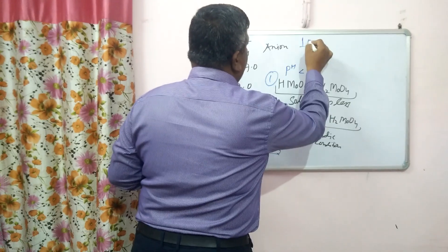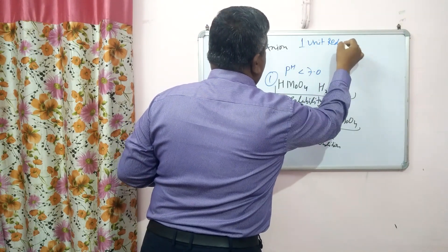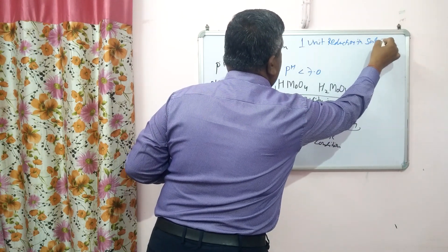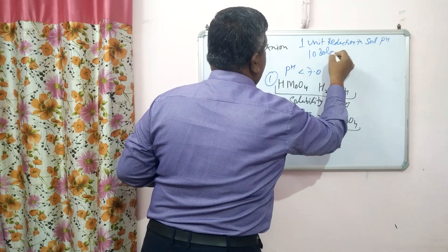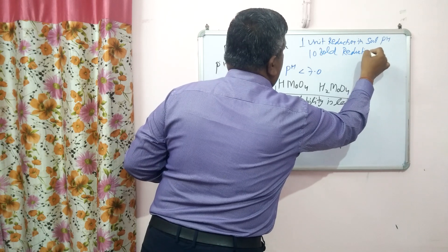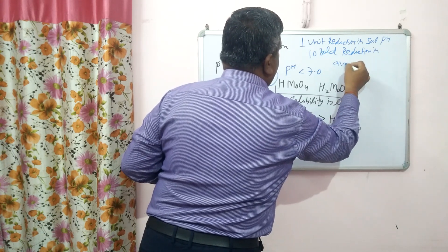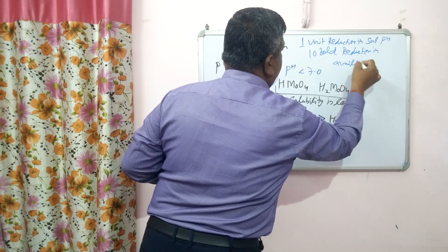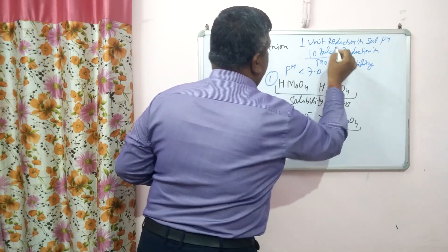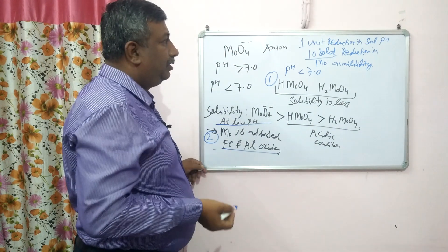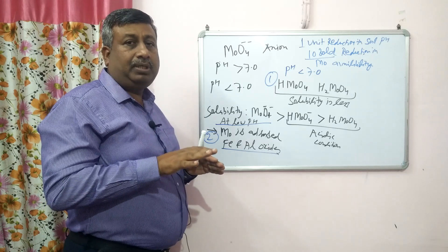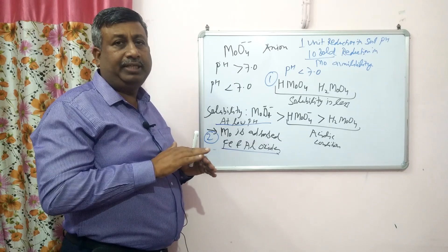If there is a one unit reduction in soil pH, there is a ten-fold reduction in molybdenum availability. So, under acidic conditions, molybdenum availability is significantly reduced, with a 10-fold decrease per unit drop in pH.